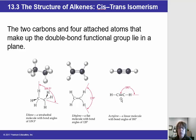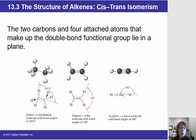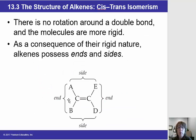The alkyne, which has a triple bond, is linear in geometry with bond angles of 180°. As mentioned, this double bond does not allow rotation, and because it doesn't allow rotation, we have the possibility of a different type of isomerism for alkenes.